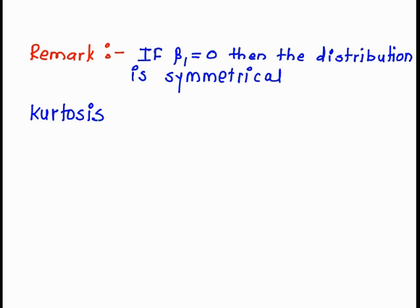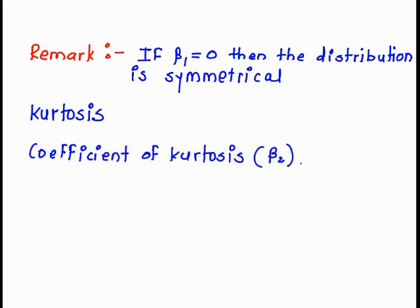Now we study kurtosis. The coefficient of kurtosis is denoted by beta 2. Beta 2 is equal to mu 4 upon mu 2 square. Depending upon the values of beta 2, we get different types of kurtosis.